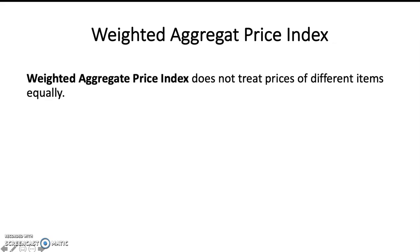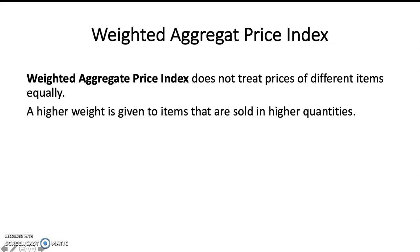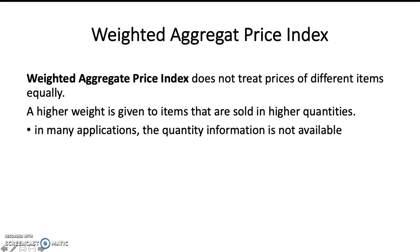A weighted aggregate price index does not treat prices of different items equally, unlike the unweighted aggregate price index. A higher weight is given to items that are sold in higher quantities, but there is no unique way to determine the weights, as they depend on the period in which the quantities are evaluated. One option is to evaluate the changing quantities over the years to derive the weighted average.